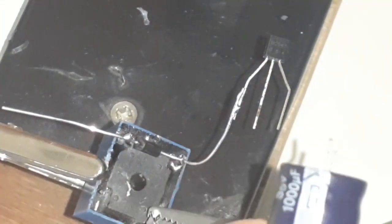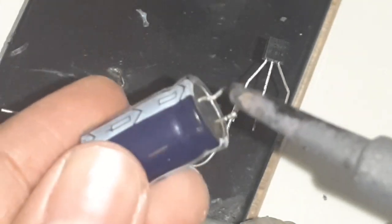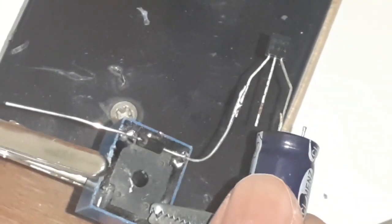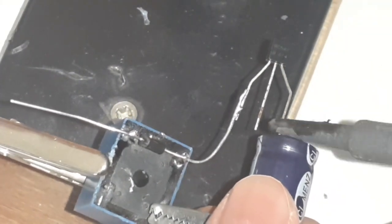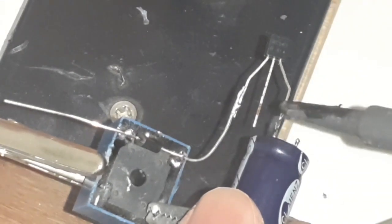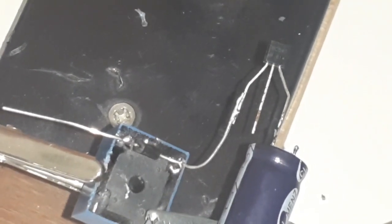Now you have to take the capacitor, the 1000uF capacitor. As you can see this silver lining right here, it indicates this is the negative leg and this one is the positive leg. We have to connect the negative leg with the emitter pin of the transistor. Now as the capacitor is connected...